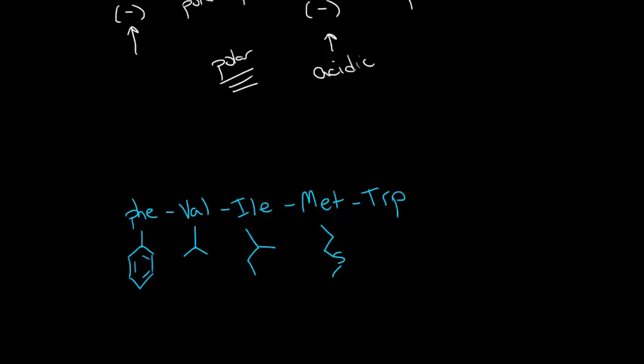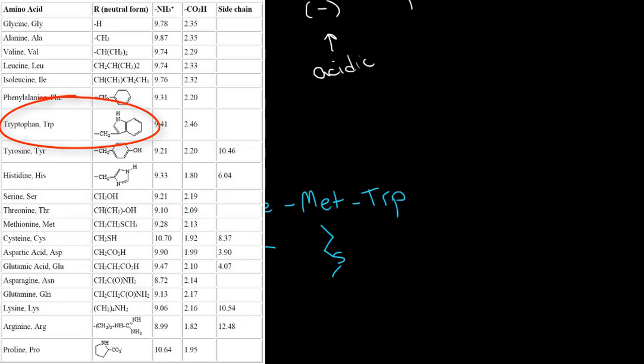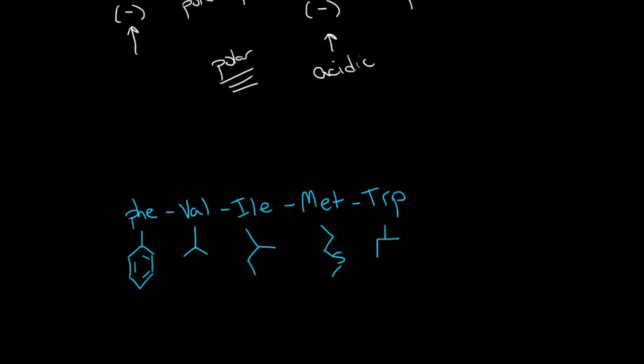It's similar to the ethers we learned about but this is a thiol. And tryptophan is really big so I'm not going to draw it out, but suffice to say it's a big ring that's nonpolar. What we see here is a nonpolar amino acid, a nonpolar amino acid, isoleucine is nonpolar, methionine is nonpolar, and tryptophan is also nonpolar. So all of these amino acids are nonpolar, so we would definitely not expect this to dissolve well in water.